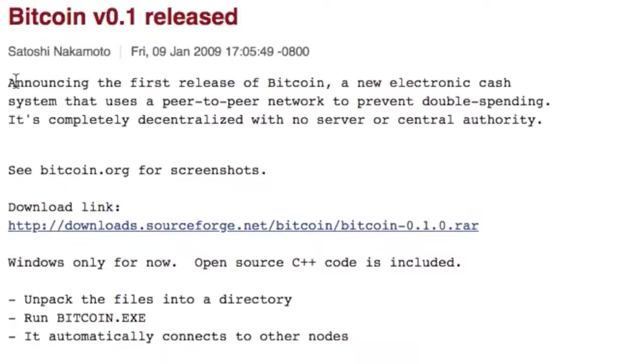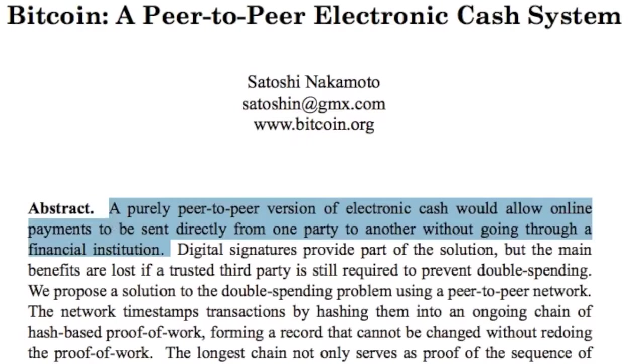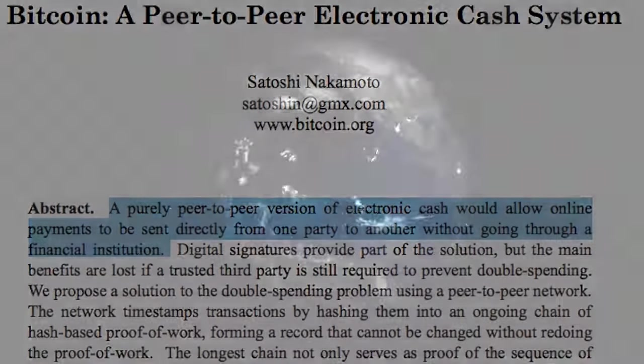In January 2009, a person or group named Satoshi Nakamoto uploaded a small piece of free shared software to the internet called the Bitcoin protocol and asked others to copy and run it on their computer.